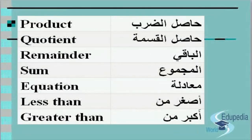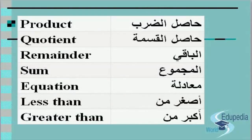Product: حاصل الضرب. Quotient: حاصل القسمة. The remainder: الباقي. Sum: المجموع. Equation: معادلة.